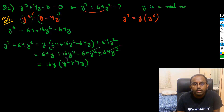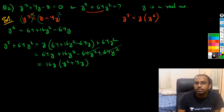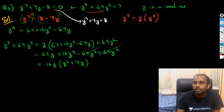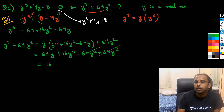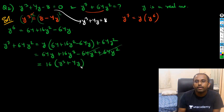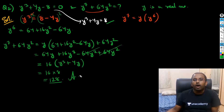We have been given y³ + 4y = 8. Taking 16 common, that becomes 16 times (y³ + 4y), and since y³ + 4y = 8, we substitute to get 16 × 8 = 128. That is the answer. So a very nice question on how to reduce higher powers by manipulating algebra.